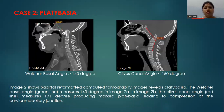These images demonstrate platybasia. In image A, the sagittal reformatted images show the Welcher basal angle measuring 143 degrees. In image 2B, the clivus canal angle measures 131 degrees, producing marked platybasia leading to compression of the cervicomedullary junction.